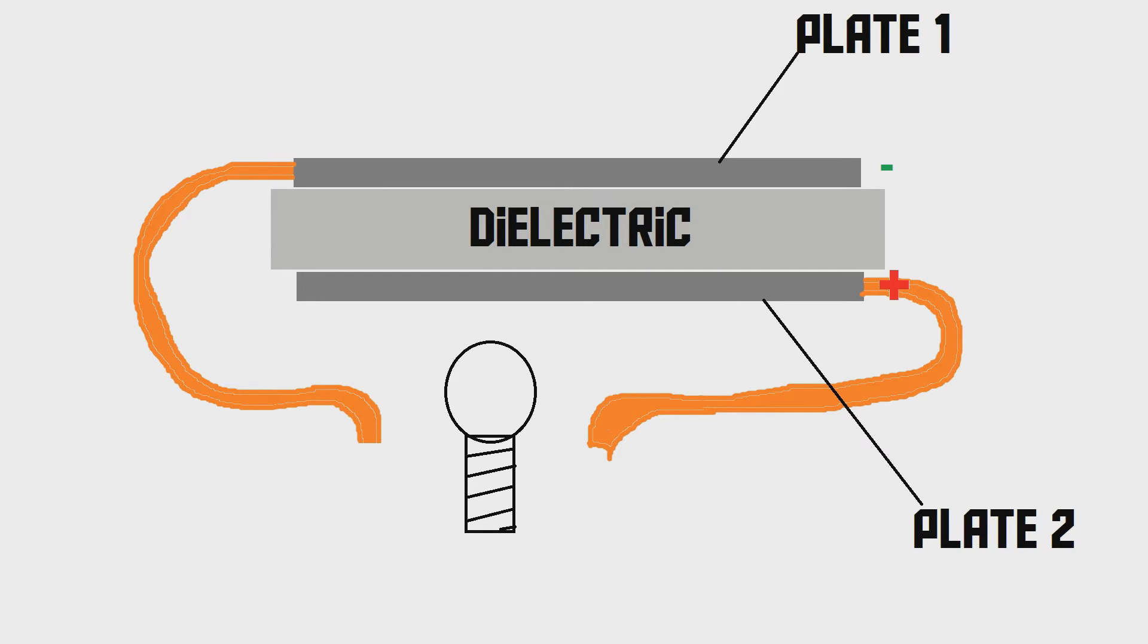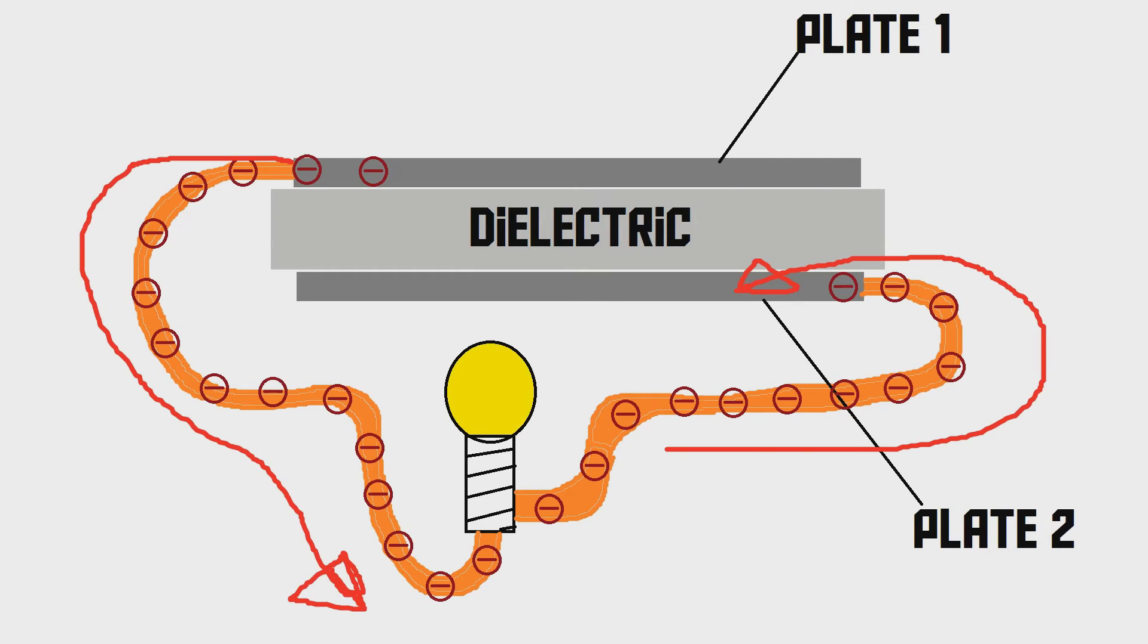Now, as you might have seen, we've replaced the battery with a light bulb. Now, if we connect the wires to the light bulb, then the electrons can go through the wire, through the light bulb, through another wire, to plate number two. Now, remember that current is running in the opposite direction of electrons, so the current is going from plate two to plate one, through the light bulb, which means that the light bulb is going to light up.